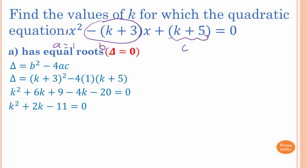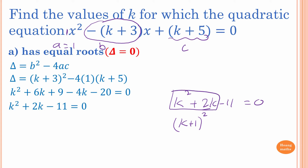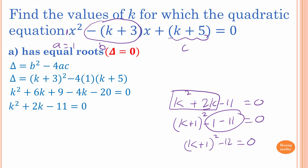To solve k² + 2k minus 11 = 0, we use completing the square. Halving the coefficient of k gives (k+1)². Expanding that gives one extra term of 1, so we subtract 1, giving (k+1)² minus 1 minus 11 = 0, which simplifies to (k+1)² minus 12 = 0.